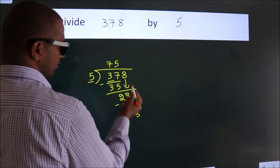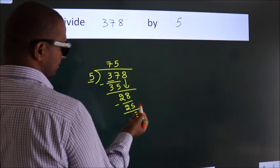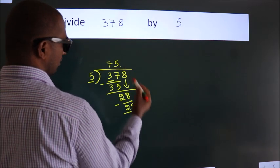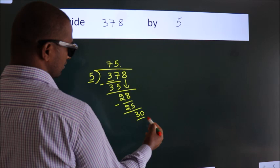After this, no more numbers to bring it down. So what we do is, we put a dot and take 0. So 30.